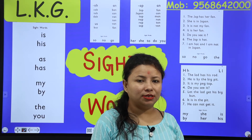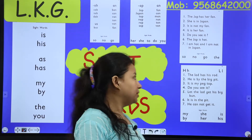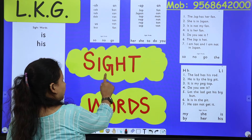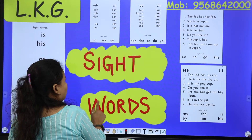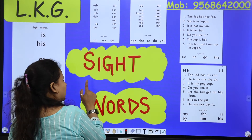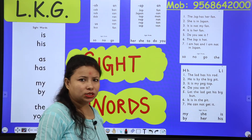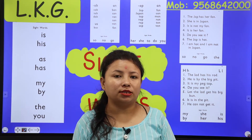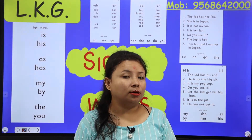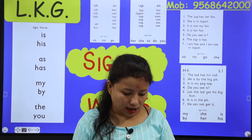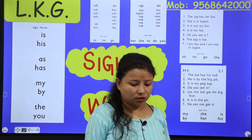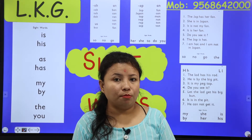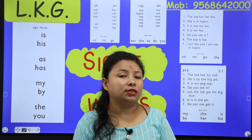Do you know what my new concept is? My new concept is sight words. Sight words — 'sight' means to see. Sight words are words that come again and again. These are words we can see again and again. Now ma'am will show you some examples.